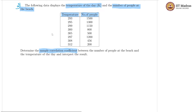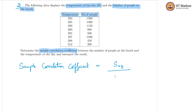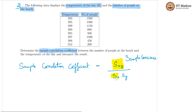Let us see how this is supposed to be done. We want the sample correlation coefficient, and the formula is Sxy divided by Sx times Sy. Here, Sxy is the sample covariance between the two variables, whereas Sx and Sy are independently the sample standard deviations of these two variables. So we need to calculate the sample covariance and the sample standard deviations separately. Let us begin with the standard deviations.